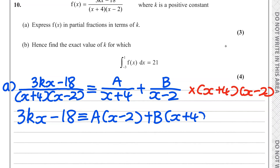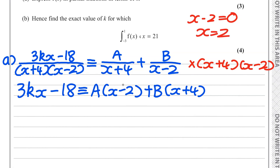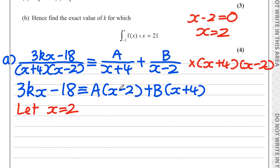From here there are two ways to solve this: substitution or equating coefficients — both are equally valid. I personally prefer substitution. We substitute values of x to make each bracket zero. Starting with (x − 2): we want x − 2 = 0, so x = 2.